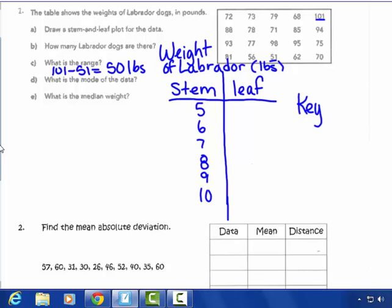So numbers in the 50s, I see a 51 and a 56, so 1, no comma, 6. In the 60s, I see a 62 and a 68, so 2 and 8. They have to be in order from least to greatest, from left to right.